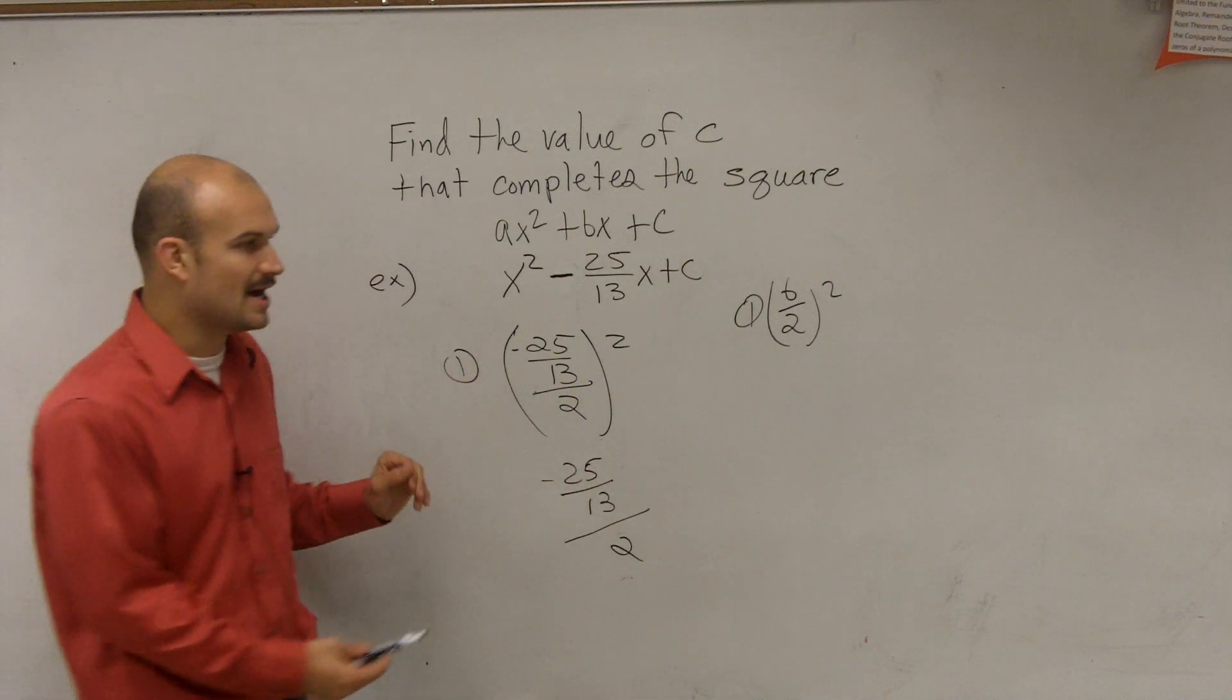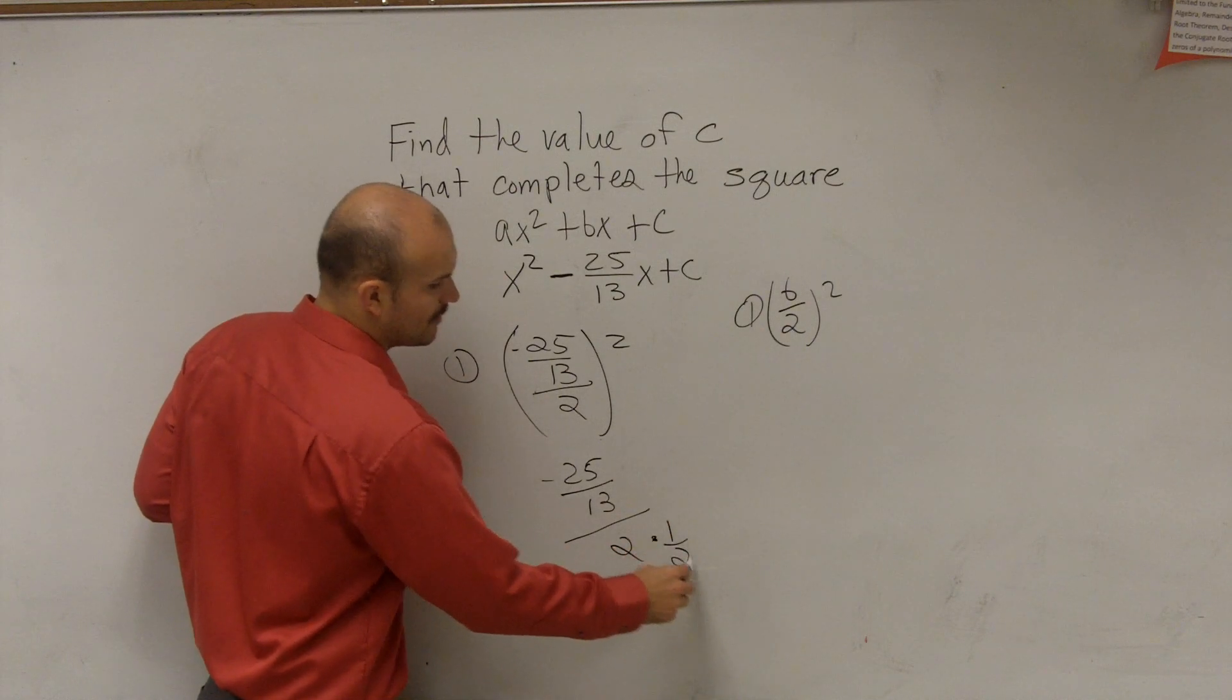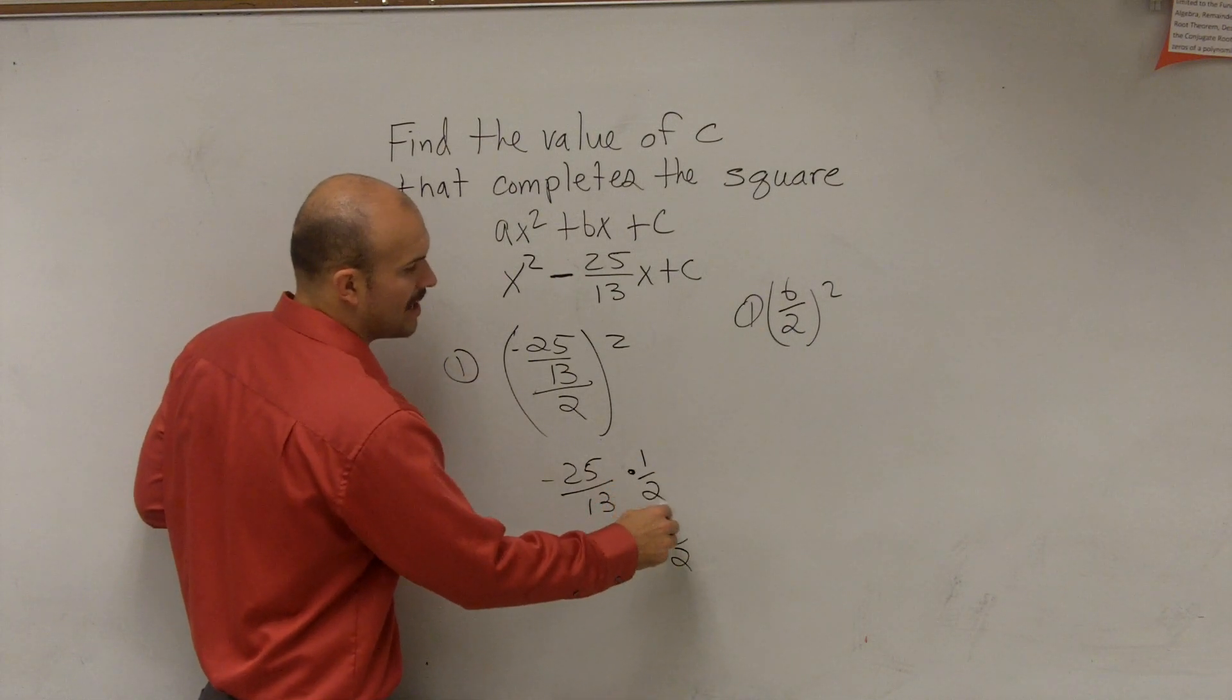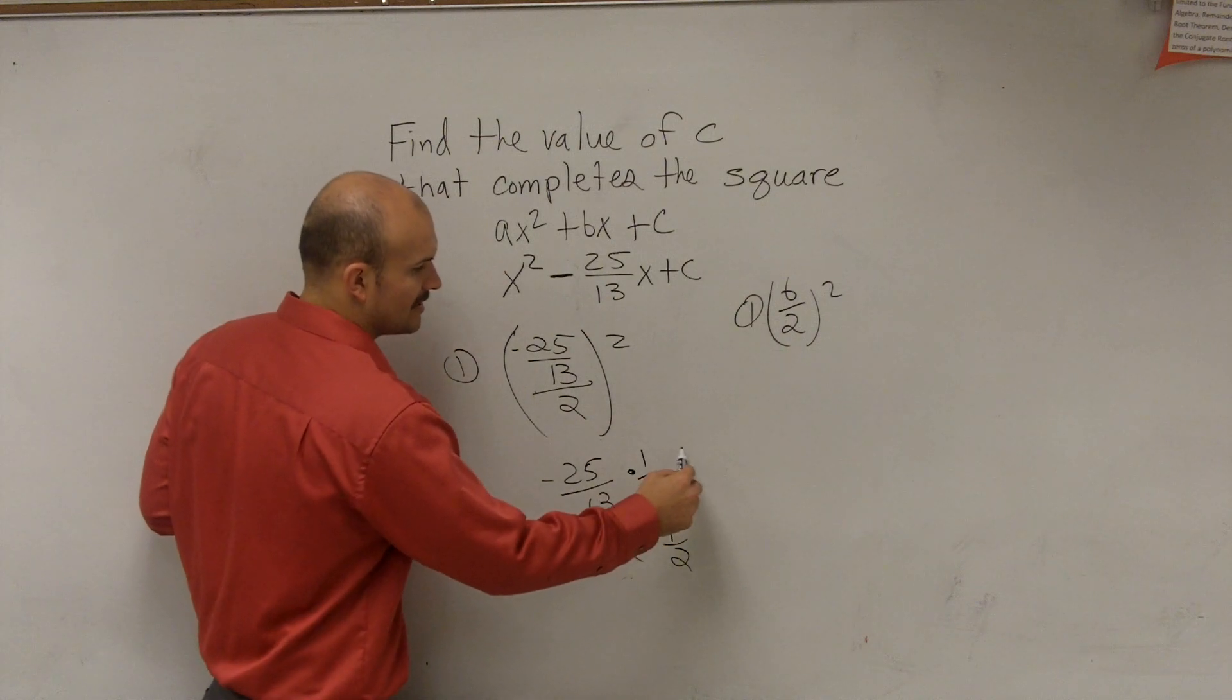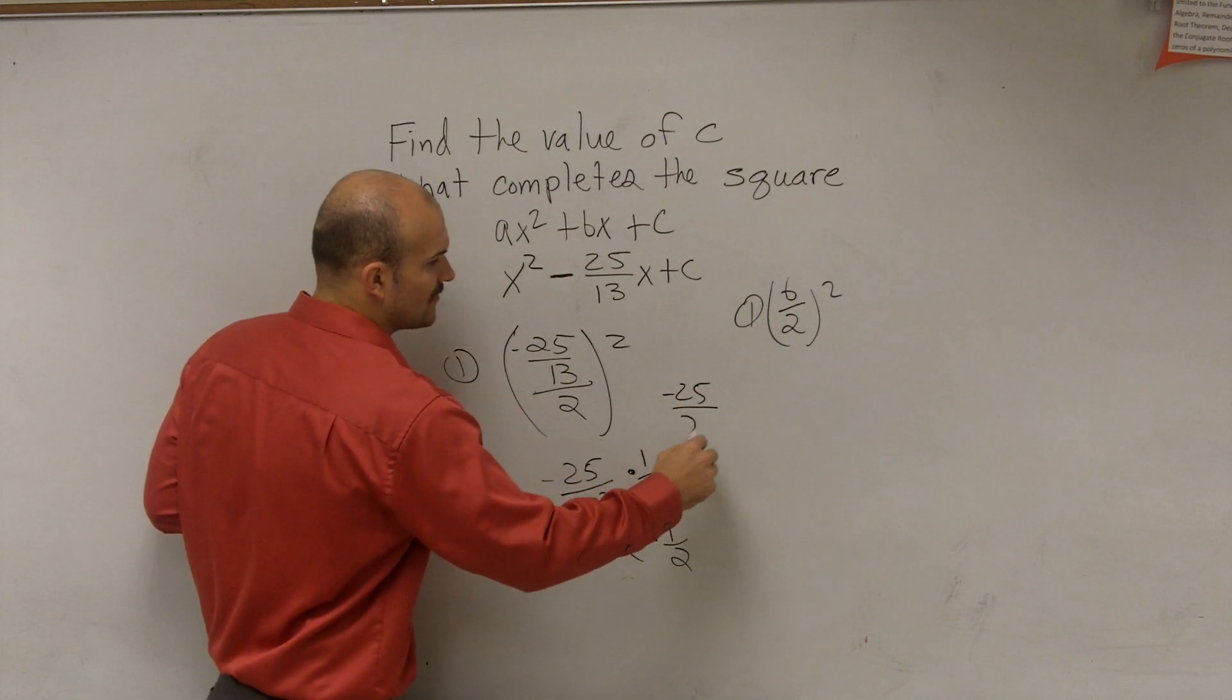The main important thing, you multiply by the reciprocal. So I multiply by 1 half on the top and the bottom. Doing that gives me a negative 25 over 26.